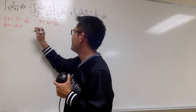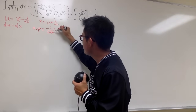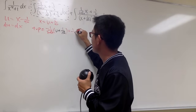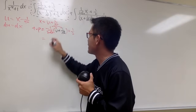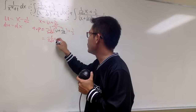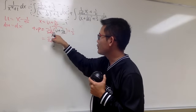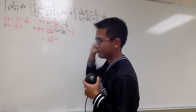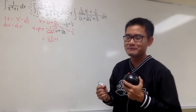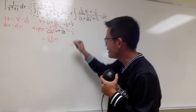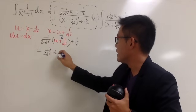Substituting, the numerator becomes negative 1 over 2 square root of 2 times u plus 1 over square root of 2, plus 1 half. Distributing: negative 1 over 2 square root of 2 times u, then negative 1 over 4, plus 1 half. Negative 1 over 4 plus 1 half is positive 1 over 4. That was a mistake in a previous video — the numerator gives negative 1 over 2 square root of 2 times u plus 1 over 4.